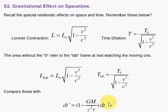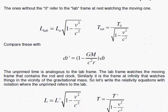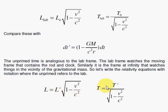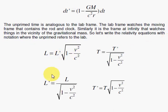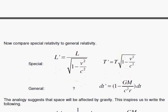The dt without the prime is at infinity, the unaffected one, and that would be the laboratory time. And over here, the laboratory L. So by putting primes on the L₀ and the T₀, we get these equations, and then we solve for L prime and T prime, and look at the analogy.